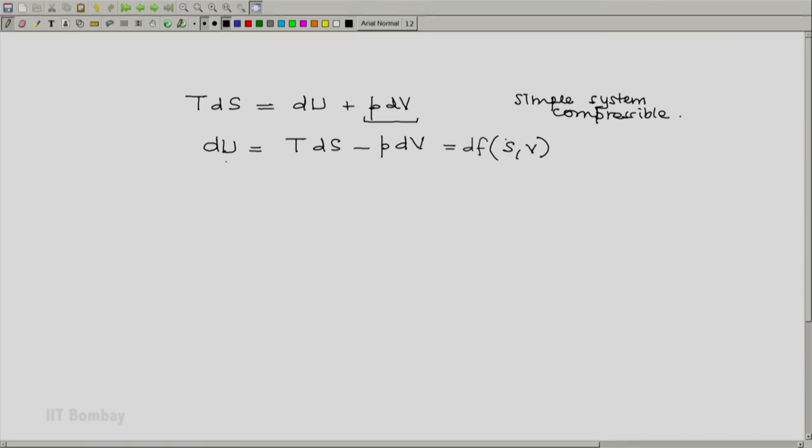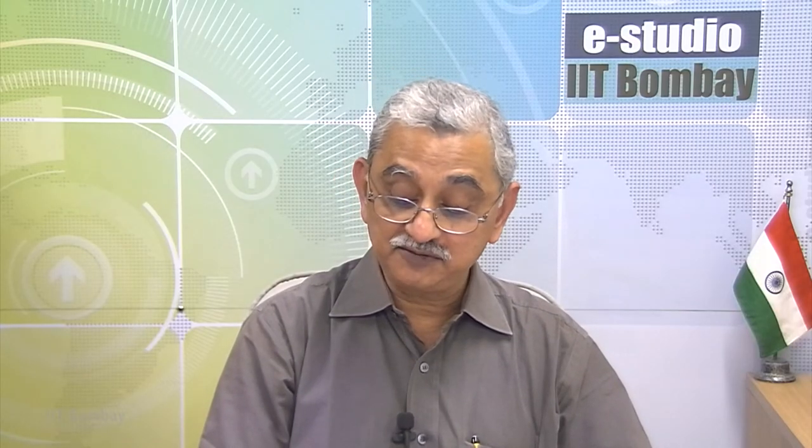Now that means this function U, energy of a system, must be a function of its entropy and volume. And if we assume that the definition of energy, a fixed value of energy, will help us fix the state of a system, then it means that we have to specify two properties. For example, S and V.